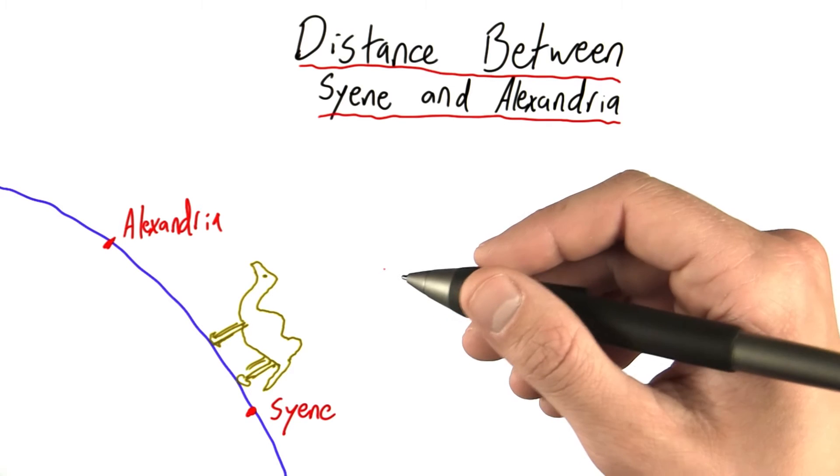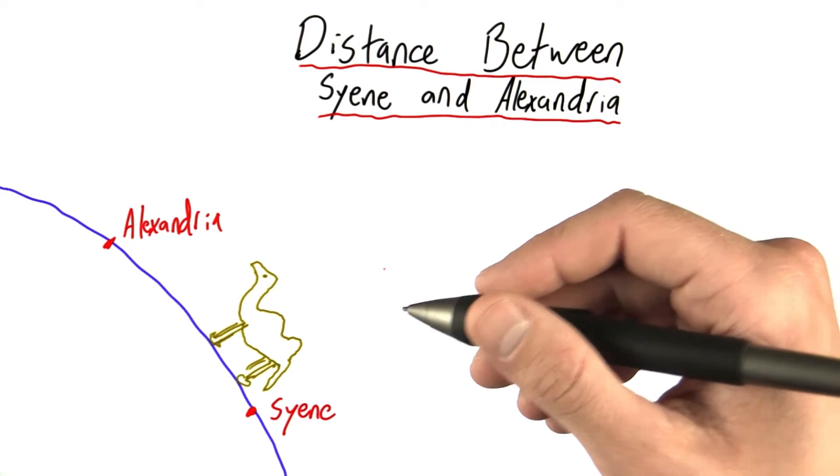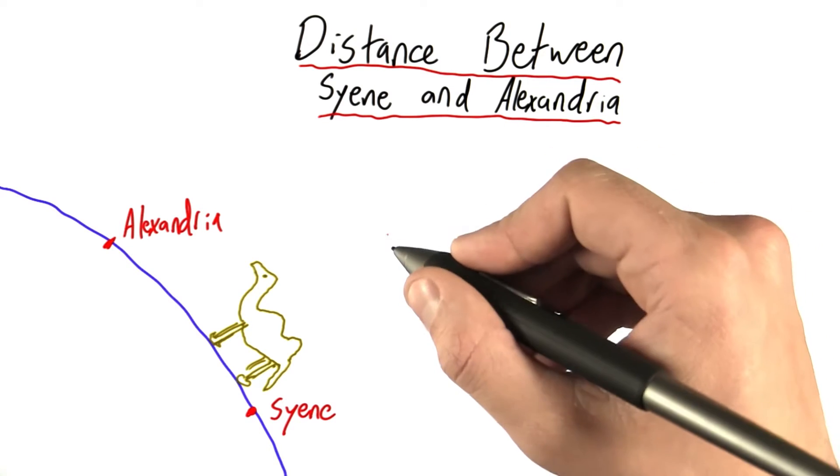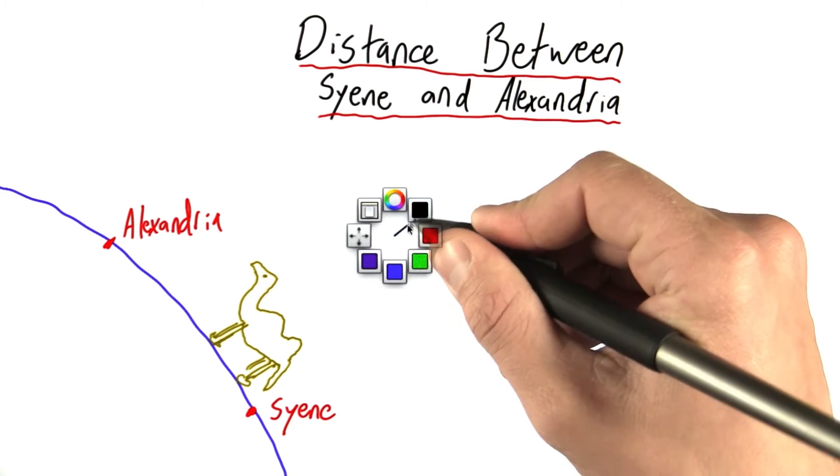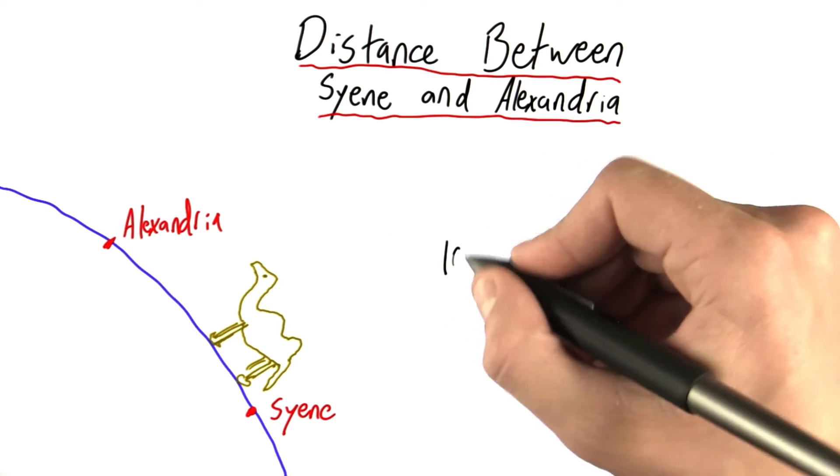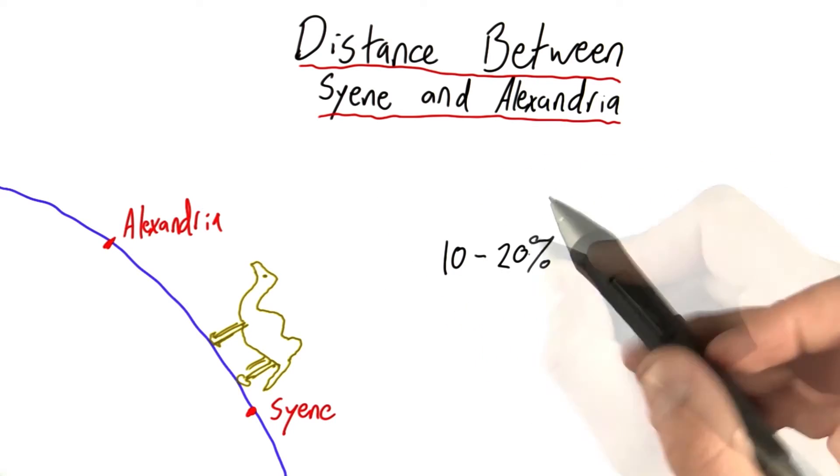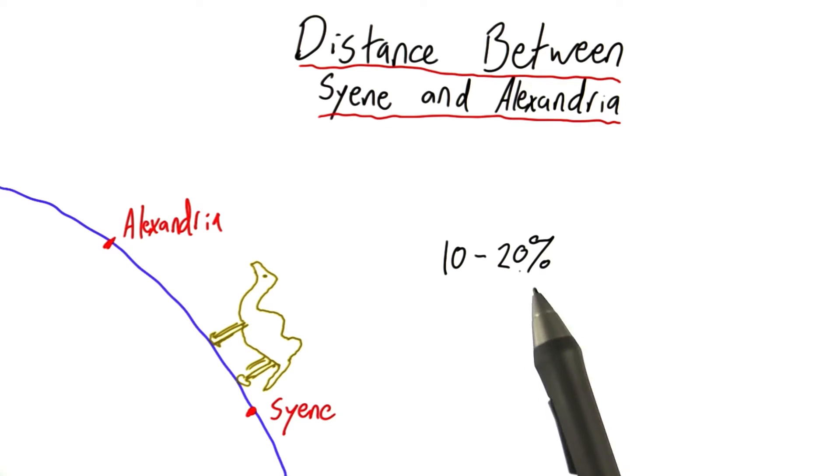In fact, with all the zigzagging and camel speeding up and slowing down, I'd estimate the uncertainty here to be about 10 to 20%. And this is truly a pretty large source of error.